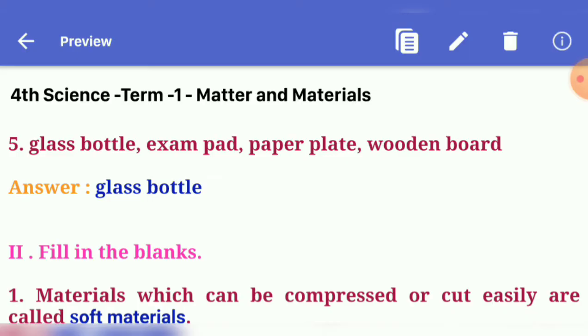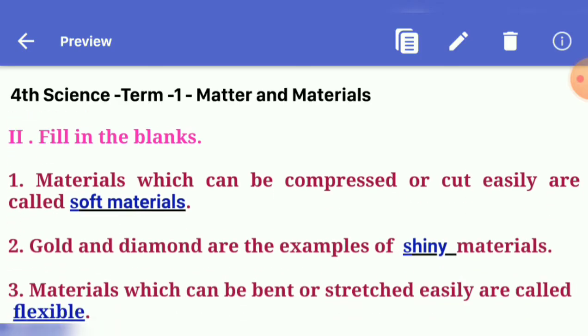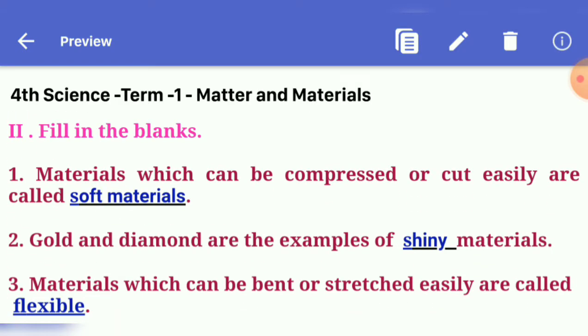Fifth one: glass bottle, example paper plate, wooden board. Answer: glass bottle. Next, second roman, fill in the blanks. First one: materials which can be compressed or cut easily are called dash dash. Answer: soft materials.